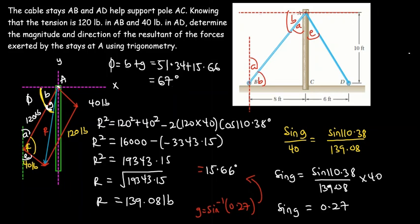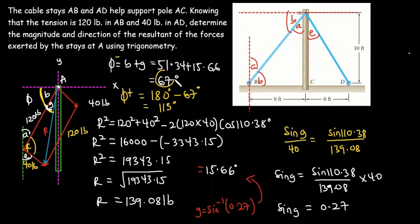So 67 degrees is the angle the resultant makes with the negative x-axis. If you want the angle with the positive x-axis, that is 180 − 67 = 113 degrees. If the question specifies the negative x-axis, use 67°; if it specifies the positive x-axis, use 113°. Thank you very much for watching this video.